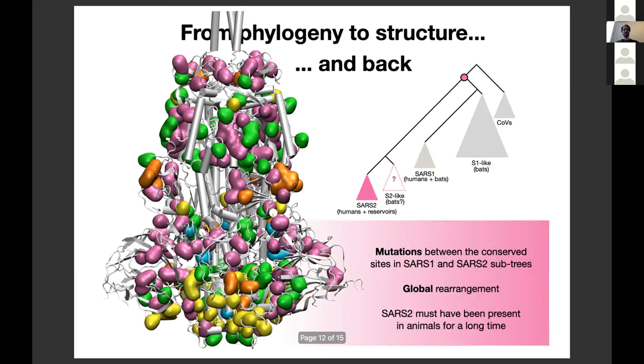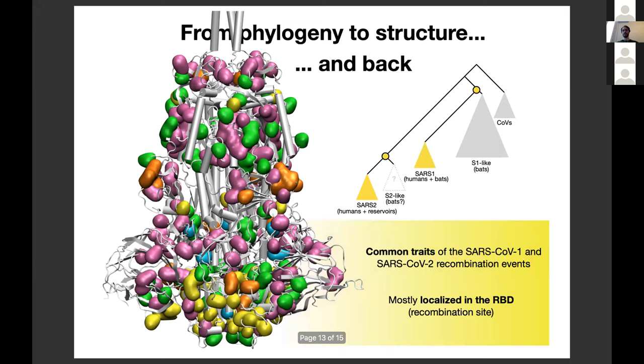But then if these are the differences, which are instead the similarities between the two spillovers? They are represented here in yellow, and they are the common traits of the SARS-CoV-1 and SARS-CoV-2 recombination events. As you see, most of them, more than 90 percent, are localized in the receptor binding domain area, which is no surprise because the RBD is the recombination site for both these spillover events.